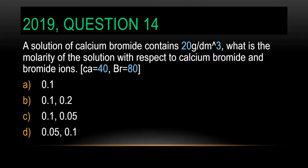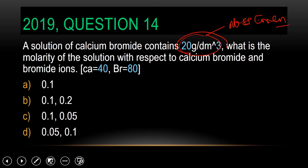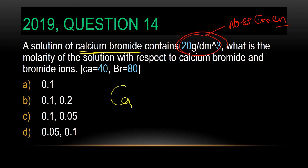A solution of calcium bromide contains 20 grams per dm cubed. What is the molarity of the solution with respect to calcium bromide and bromide ions? Now, 20 grams per dm cubed is our mass concentration. Our molar concentration will be in mol per dm cubed. Let's look at key things: how will calcium bromide be written? Calcium has a charge of 2+.